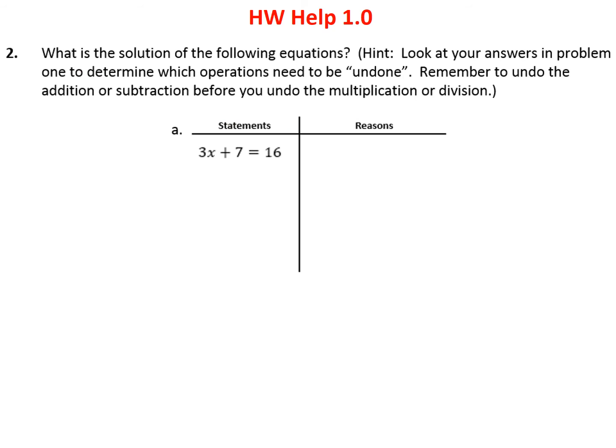In problem 2, we're simply going to take the four same problems we looked at in problem 1 where we identified the two operations that need to be undone, and we're simply going to undo them. We're also going to look at how to do mathematical proofs, which means every time we do something, we need to give a reason. The first reason given is what we call the given — this is the problem that's been given to us, where we start.